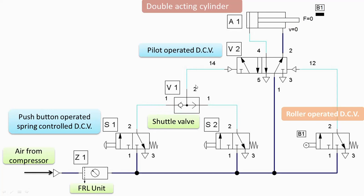Then there is the shuttle valve which will control the direction of the flow. With the help of flow from this side we will get the left envelope mode, and if you get the flow from the other side then you will get the right envelope mode. This is very important. There is also a pilot operated direction control valve here.